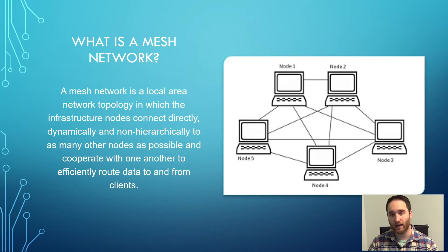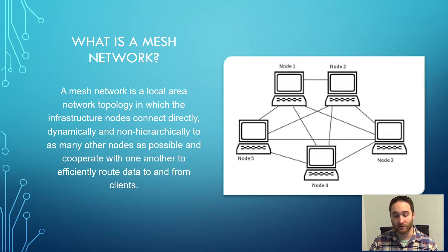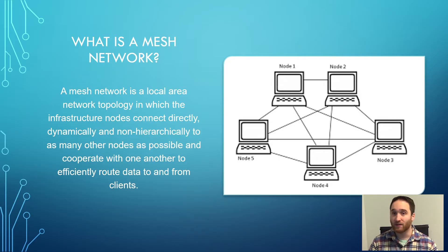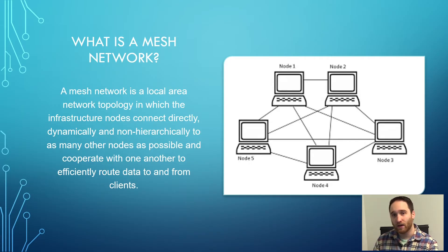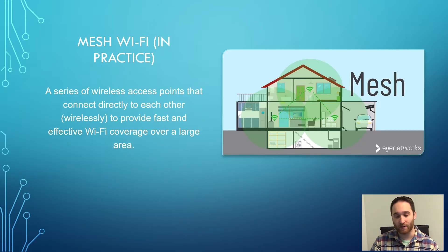Before we get into the Wi-Fi component, let's look at the definition of a mesh network. A mesh network is a local area network topology in which the infrastructure nodes connect directly, dynamically, and non-hierarchically to as many other nodes as possible, and cooperate with one another to efficiently route data to and from clients. Essentially, your network nodes or devices can communicate directly with one another — they don't need to make a big loop or rely on some other device.